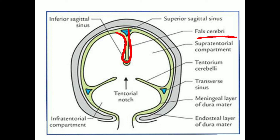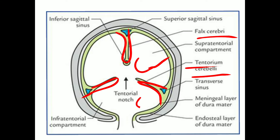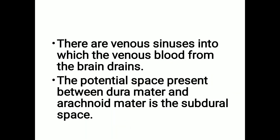Between the cerebrum and the cerebellum, the inner layer of the dura mater forms the tentorium cerebelli. So the tentorium cerebelli is present between the cerebrum and the cerebellum, and the falx cerebelli is present between the two hemispheres of the cerebellum. There are also venous sinuses into which the venous blood from the brain drains.